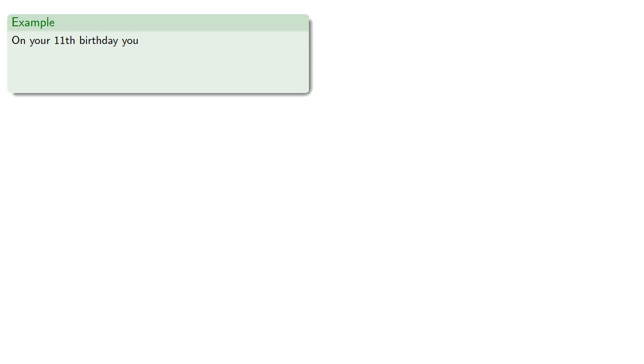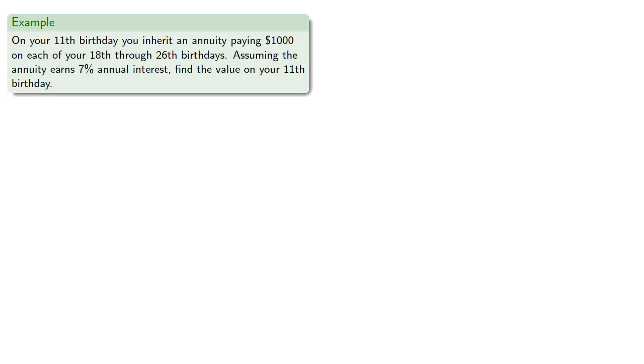For example, on your 11th birthday, you inherit an annuity paying $1,000 on each of your 18th through 26th birthdays. Assuming the annuity earns 7% annual interest, find the value on your 11th birthday.